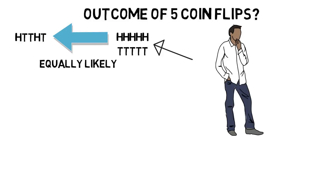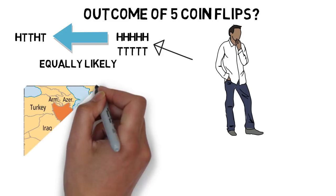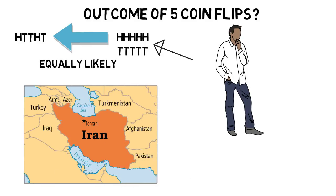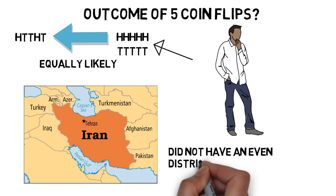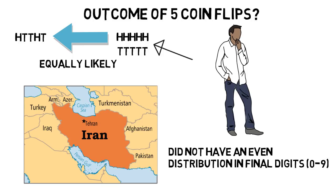And years ago, two students analyzed the results of a presidential election in Iran where one candidate won by a large amount, only to find that the total votes amassed by the four candidates did not have an even distribution in their final digits. It wasn't evenly distributed from 0 to 9, which wasn't proof but pointed them in the direction that the outcome was fixed as many people thought.